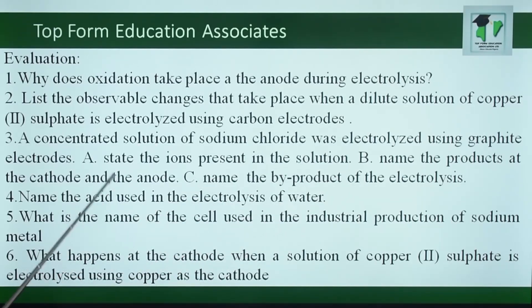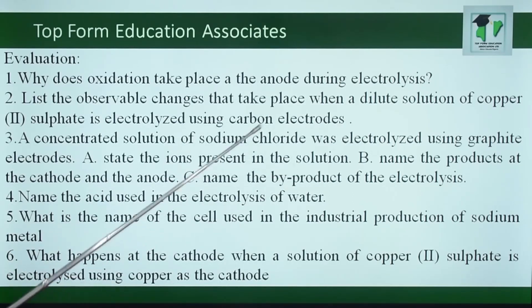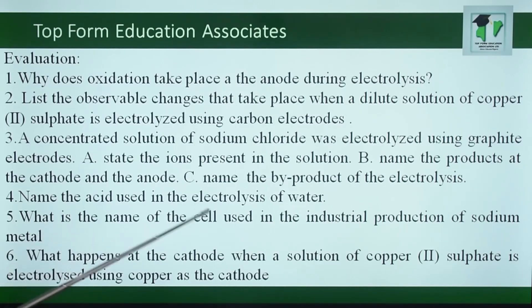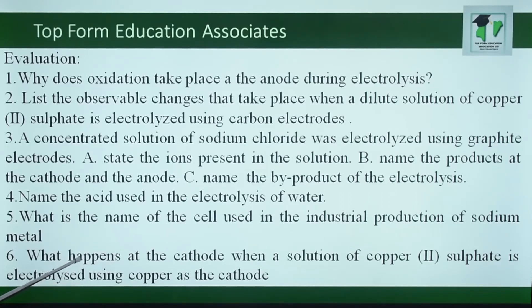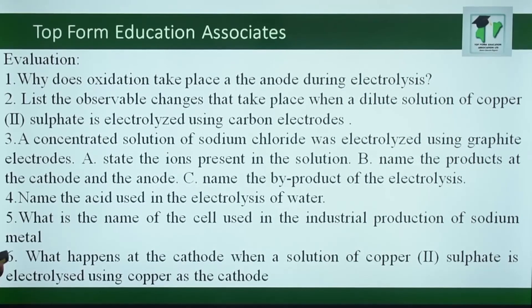The products at the cathode are hydrogen gas, and at the anode, chlorine gas. The by-product of the electrolysis is sodium hydroxide. Question 4: Name the acid used in electrolysis of water. The acid used is tetraoxosulfate-6-acid (H₂SO₄). Question 5: What is the name of the cell used in industrial production of sodium metal? The name of the cell is the Down cell. Question 6: What happens at the cathode when a solution of copper-2 sulfate is electrolyzed using copper as a cathode? Copper ions are deposited at the cathode.